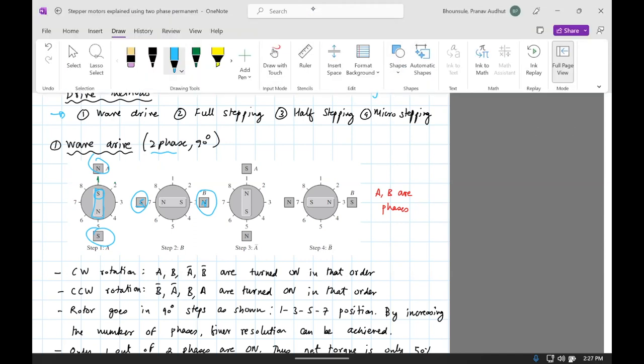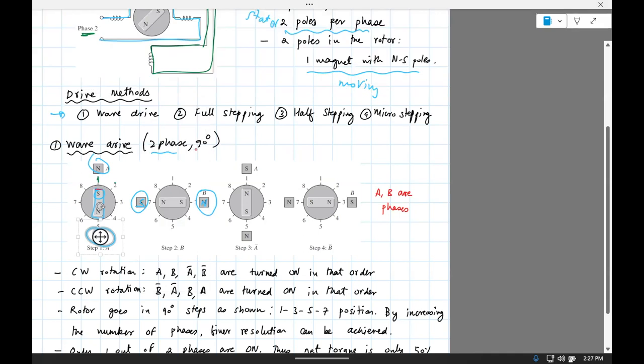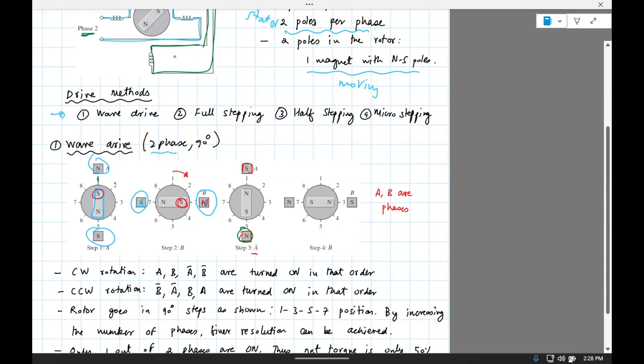So what that will lead to is this south, which was there earlier, will now get attracted to this north pole, and so it'll actually rotate by 90 degrees clockwise. So you do the same thing with A now, you reverse the way the current passes, instead of going from one way, you do it the other way, and then you have a north pole down and south pole up, which means this south pole will get attracted to this north pole. So you turn 90 degrees, and then another 90 degrees.